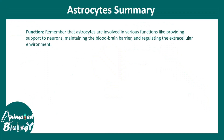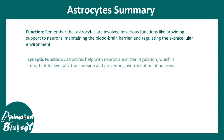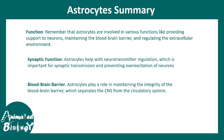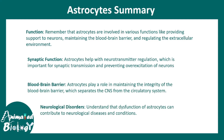Let us summarize what we learned about astrocytes. First, we talked about two major functions: astrocytes take part in neuromodulation and synaptic activity, and they take part in forming the blood-brain barrier, which prevents harmful substances from entering. We then focused on how astrocytes modulate synaptic function, discussed gliotransmitters, explored aspects of blood-brain barrier formation, and ultimately looked at how astrocytes are involved in neurological disorders.